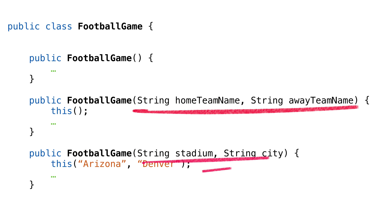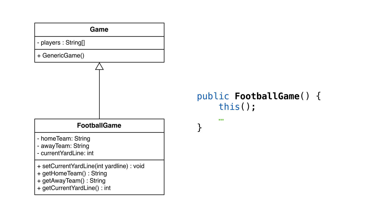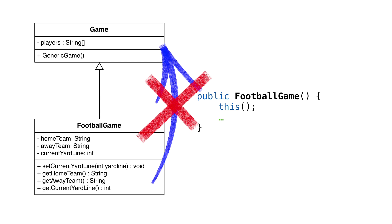We cannot have multiple constructors with the same parameter list, even if the parameter names are different — Java wouldn't let us do that even without constructor chaining. The this keyword also only works with constructors for the current class. We cannot use it to call constructors in our super class; to do that, we'd use the super keyword to call the parent class.